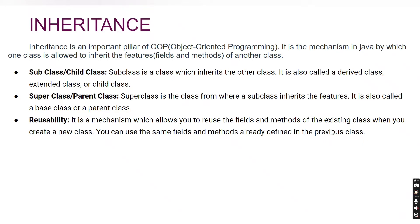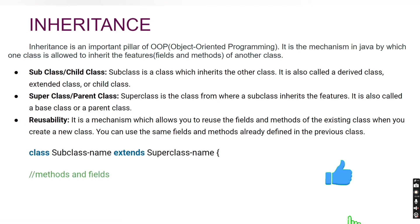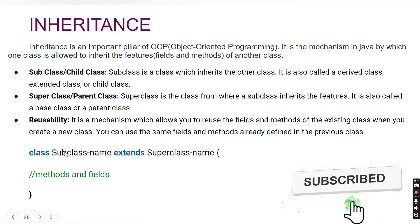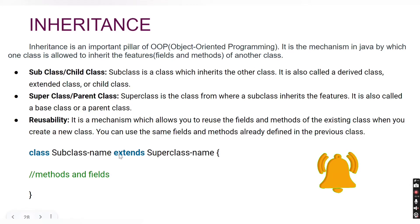The syntax of inheritance is declared like this: you write the class keyword, then the subclass name, and then use the keyword `extends`. When you use `extends`, it indicates that this class is a subclass. After `extends`, whichever class you provide acts as the parent class, and inside this subclass you provide your implementation. That is how you make use of inheritance.